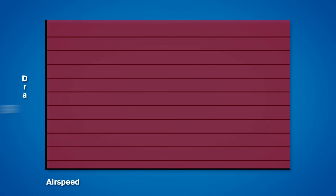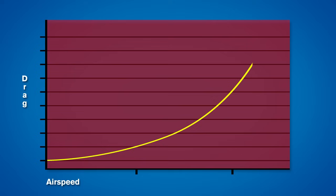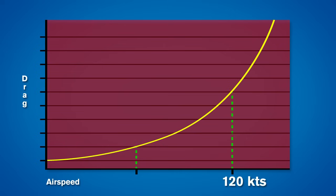In fact, the amount of parasite drag you experience is directly proportional to the square of the airspeed. For example, an aircraft traveling at 120 knots will experience four times as much parasite drag as the same plane going 60 knots at the same altitude.